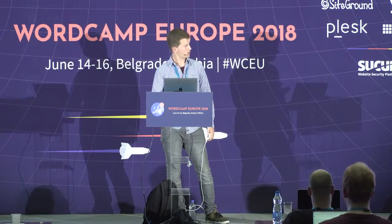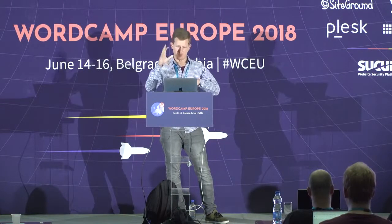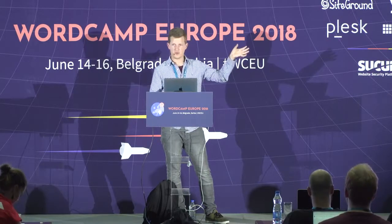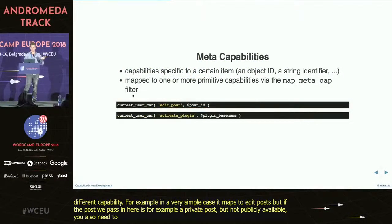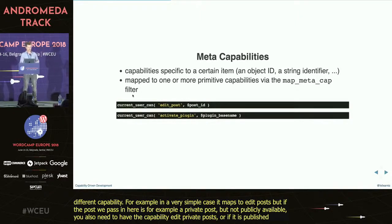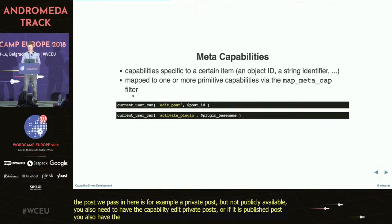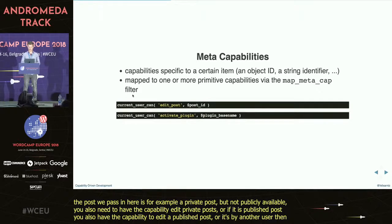edit_post is a more complicated example where in core it can map to several different capabilities. In a very simple case it would map to edit_posts. But if the post we pass in is a private post, you also need to have the capability to edit private posts. Or if it's a published post, you also need the capability to edit published posts. Or if it's by another user, you also need the capability to edit other people's posts.